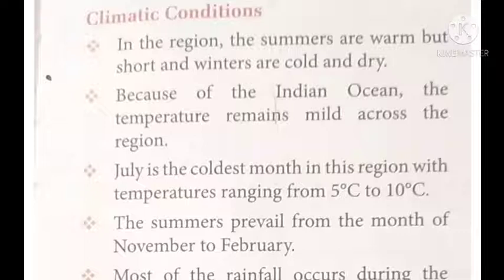July is the coldest month, with the temperature ranging from 5 degrees to 10 degrees Celsius.